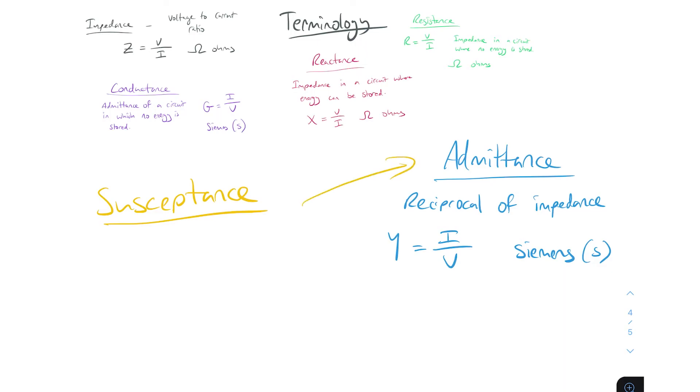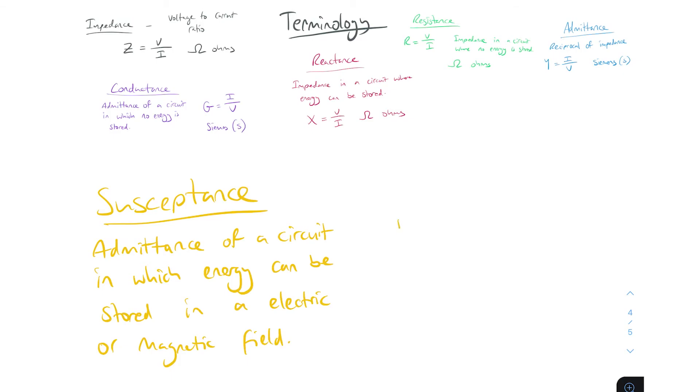Susceptance is the admittance of a circuit in which energy can be stored in an electric or magnetic field. We denote susceptance with the letter B, and the formula for is I over V, so current over voltage. Again same as admittance, it's measured in siemens and we denote that using S. And that's it.